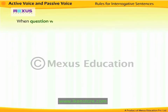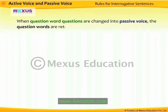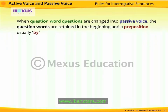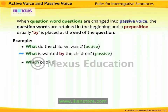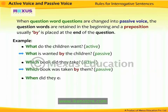When question word questions are changed into passive voice, the question words are retained in the beginning, and a preposition — usually 'by' — is placed at the end of the question. For example, 'What do the children want?' becomes 'What is wanted by the children?' 'Which book did they take?' becomes 'Which book was taken by the children?' 'When did they eat ice cream?' becomes 'When was ice cream eaten by them?'